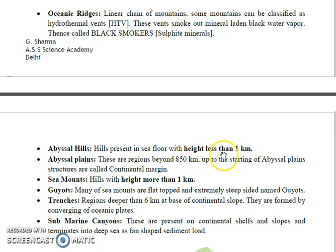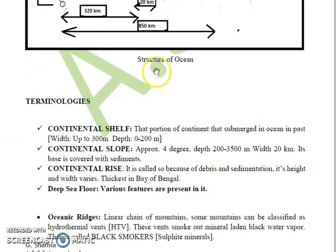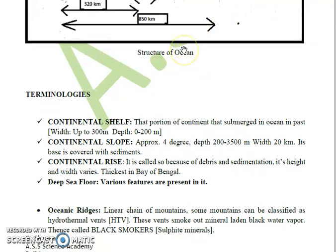Coming to the abyssal plain. These are the regions beyond 850 km from the land or shore, as shown in the diagram of the ocean structure. The sea region from 0 to 850 km is called the continental margin, and beyond 850 km it is called the abyssal plain.